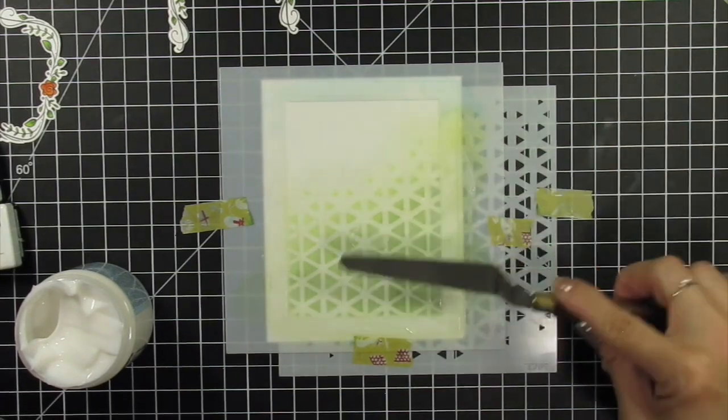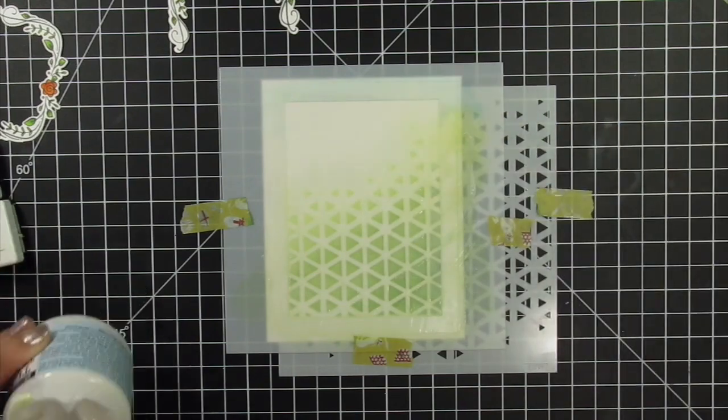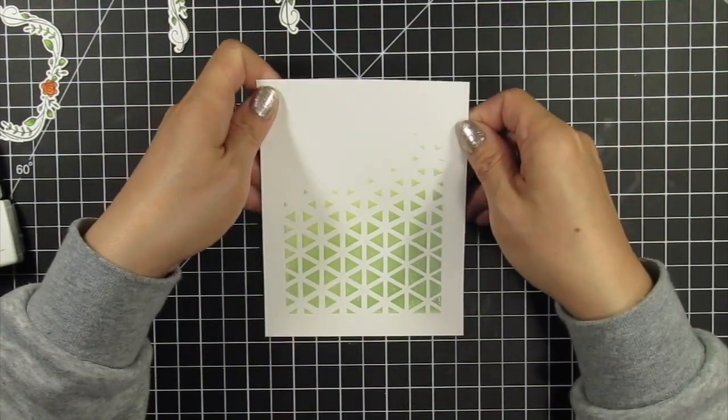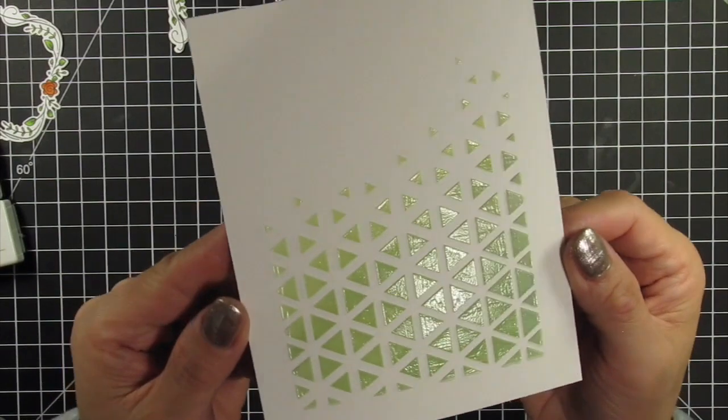I use a palette knife to apply the paste across the stencil, scraping it right across the top to make it perfectly even. Then I set it aside to dry for a couple of hours.